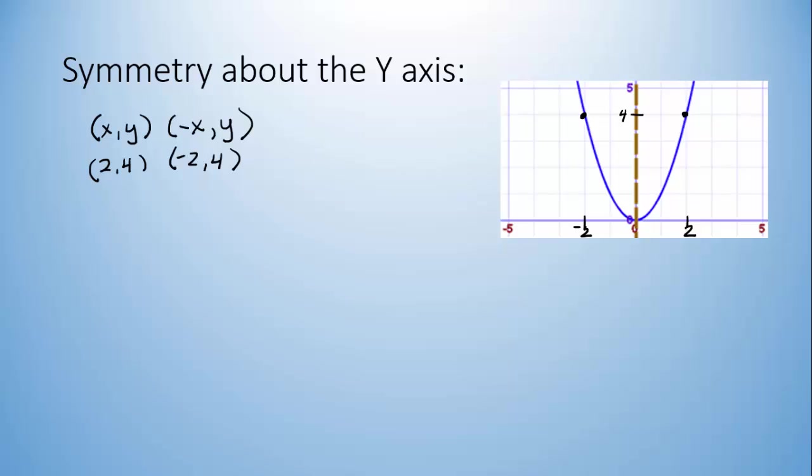For every point on this graph, there is a point that's exactly the same distance away from the y-axis, but on the opposite side. Here, and here, and here, and here.